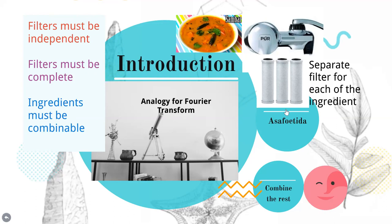What does the Fourier transform do? Imagine this entire machine is a Fourier transform. Given a sambar, it finds the recipe — it finds the ingredients. How? Run the sambar through filters to extract each ingredient. Why is the sambar analogy considered here? Recipes are easier to analyze, compare, and modify than the original signal itself. How do we get the sambar back? Remove the asafoetida and blend the rest of the ingredients — you will get your favorite sambar back.